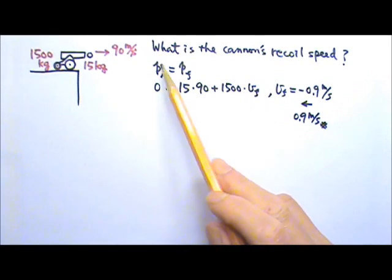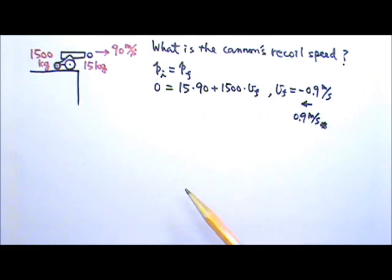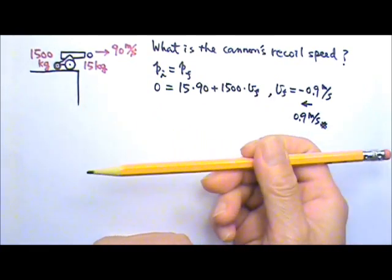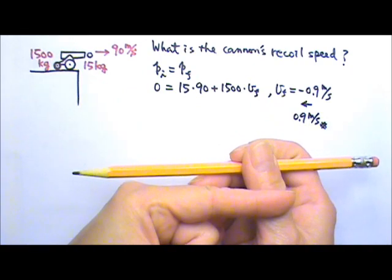The initial momentum is zero, so the final momentum is also zero. This means that after the explosion, the cannon and the cannonball must have equal amount but opposite direction momentum, so they can cancel.